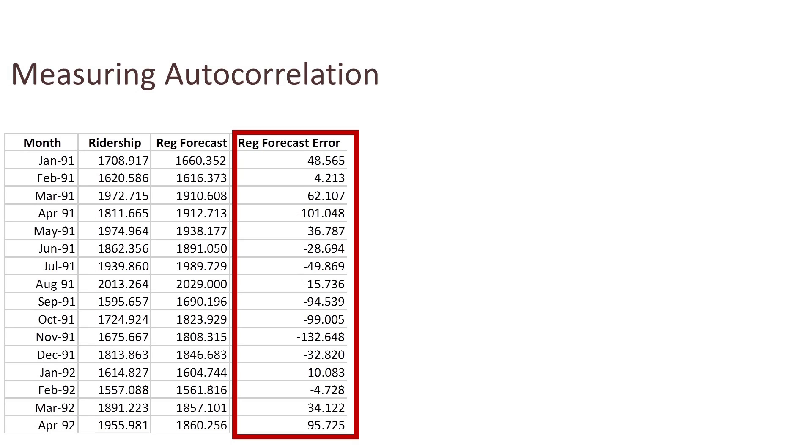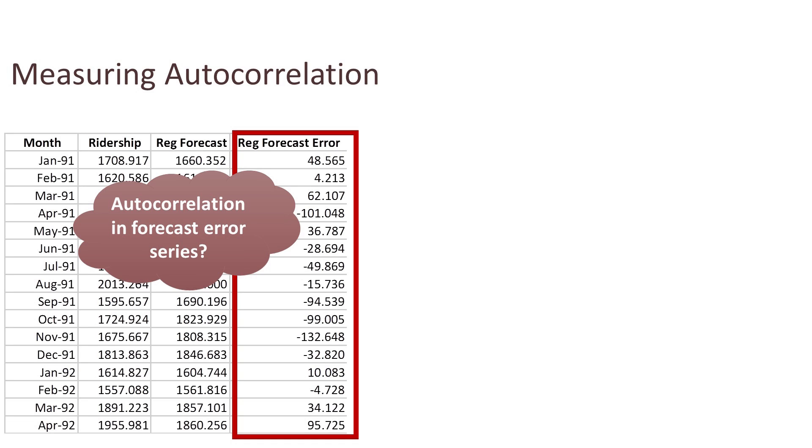Computing autocorrelation is very similar to computing the ordinary correlation coefficient between two columns of data. We start by creating new columns that are the lagged series at lags 1, 2, 3, etc.